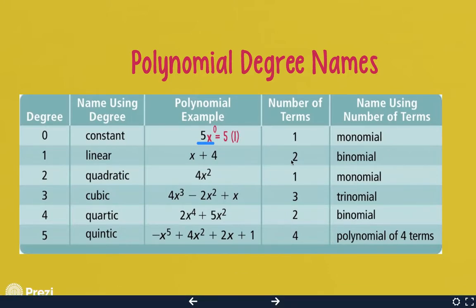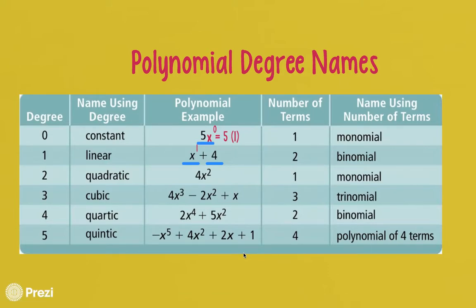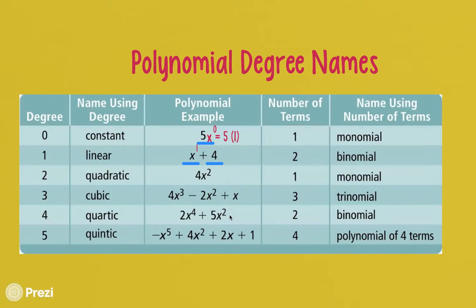The next one has two terms, so the special name is binomial. The first term is degree 1 because there's a hidden exponent of 1 when no exponent is shown, and the second term is degree 0. The highest degree is 1, and the special name for degree 1 is linear — so it's a linear binomial. As a rule of thumb: when all terms have just one variable, whatever your highest exponent is equals the degree of the entire polynomial.